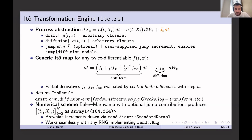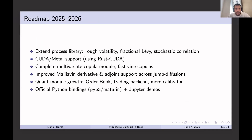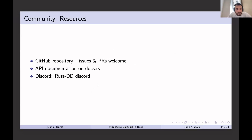I also want to extend it with the fractional version. My roadmap for the future includes: more CUDA and possibly Metal support, finishing my copula module which is very useful for statistical analysis, improving the Malliavin derivatives for more sensitivity measurements, and possibly introducing Python bindings for non-Rust users. The library is available open-sourced on GitHub, API documentation is available on docs.rs, and we also have a Discord channel in the Rust open-source community. Thanks for your attention.